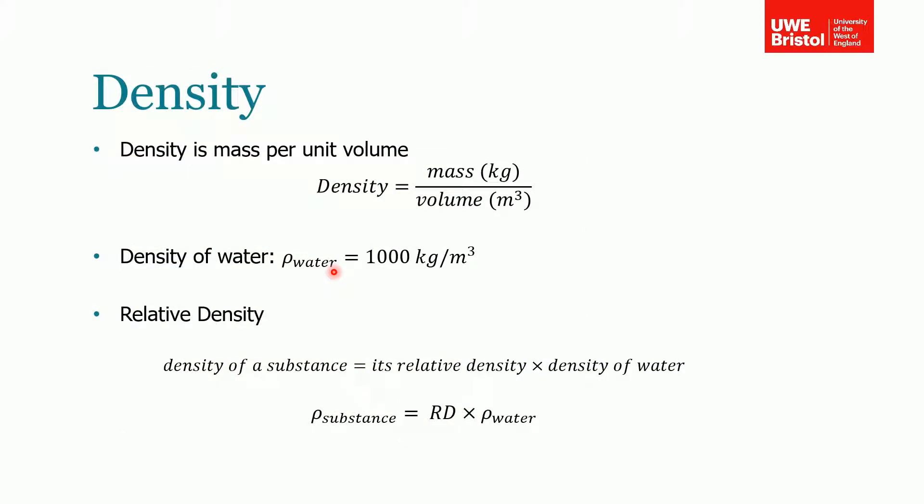Now we come to the properties of these fluids. First one is density. Density is defined as the mass per unit volume, mass normally in kilograms and volume normally in meters cubed. For example, the density of water is 1000 kilograms per meter cubed. That's just the mass per unit volume.